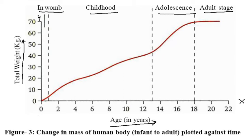Age is given as 0, 2, 4, 6, 8, 10, 12, 14, 16, 18, 20, and 22 years — and age 13 years is marked. Weight on the Y-axis is given as 0, 10, 20, 30, 40, 50, 60, and 70 kg.